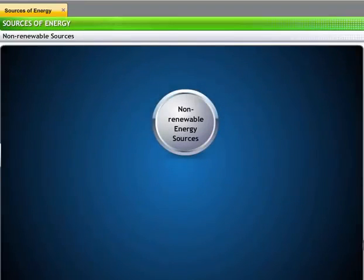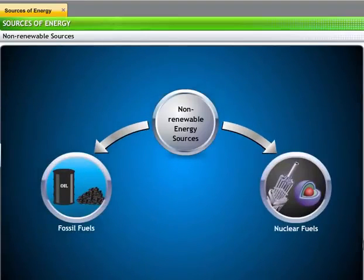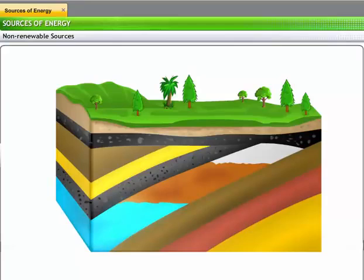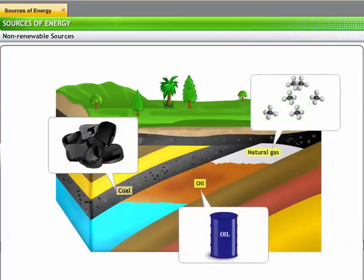Non-renewable sources are classified into fossil fuels and nuclear fuels. Fossil fuels are found within the rocky layers under the Earth's crust and include coal, oil and natural gas.